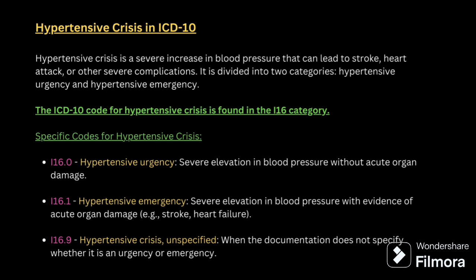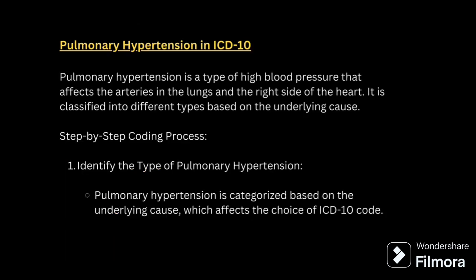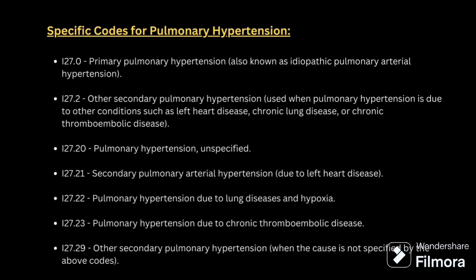Hypertensive crisis is a severe increase in blood pressure that can lead to stroke, heart attack, or other severe complications. It is divided into hypertensive urgency and hypertensive emergency, coded under the I16 series. I16.0 is hypertensive urgency — elevation in blood pressure without organ damage. Pulmonary hypertension is a type of high blood pressure affecting the arteries inside the lungs. It is classified into primary pulmonary hypertension (I27.0) and secondary pulmonary hypertension (I27.2 to I27.29).